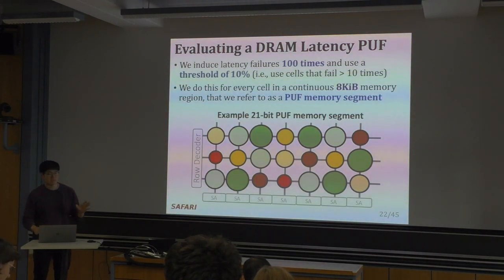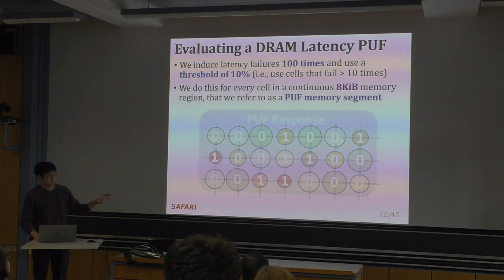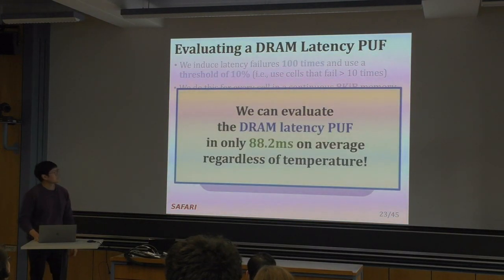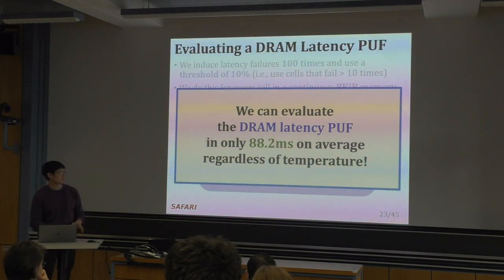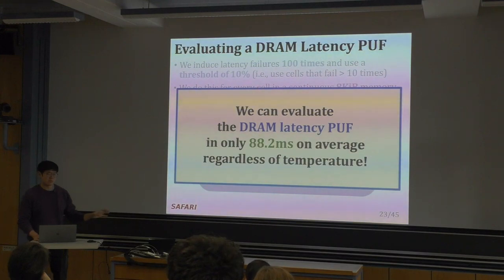Running this algorithm on a device, we get a PUF response depending on which cells were weak. Using this methodology, we can evaluate the DRAM Latency PUF in only 88.2 milliseconds on average regardless of temperature, because we can generate failures quickly regardless of the operating temperature.